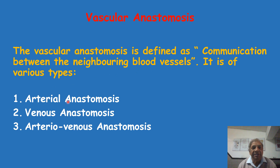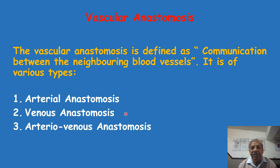The first kind is arterial anastomosis — the communication or joining of one artery with another artery. This communication between arteries is called arterial anastomosis. Similarly, there is communication between veins running together, called venous anastomosis, and venous anastomosis is much more frequent in comparison to arterial anastomosis.